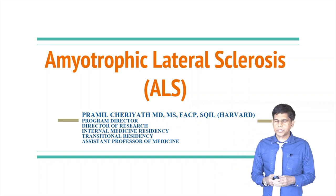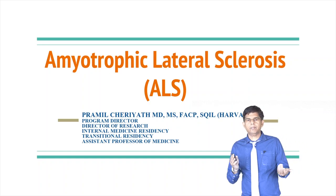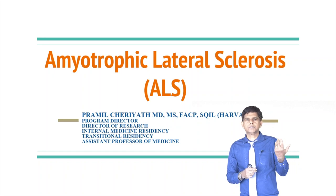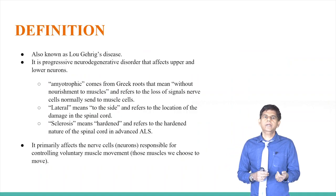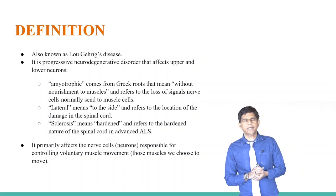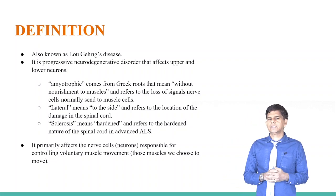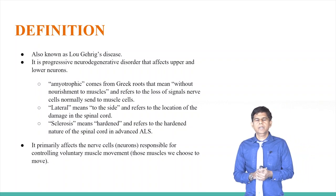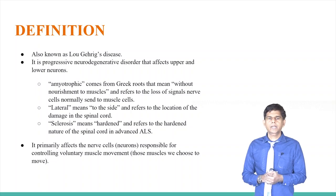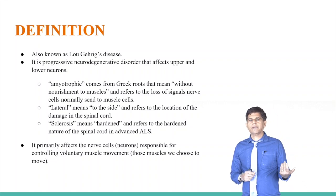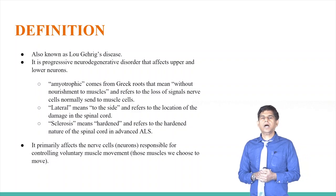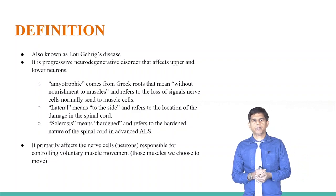Let's get into our topic today: amyotrophic lateral sclerosis. By definition, it's a progressive neurodegenerative disorder that affects upper and lower motor neurons. It's also called Lou Gehrig's disease. 'Amyotrophic' means without nourishment to the muscles, 'lateral' refers to the side, and 'sclerosis' means hardened — referring to hardening in the spinal cord in advanced ALS.